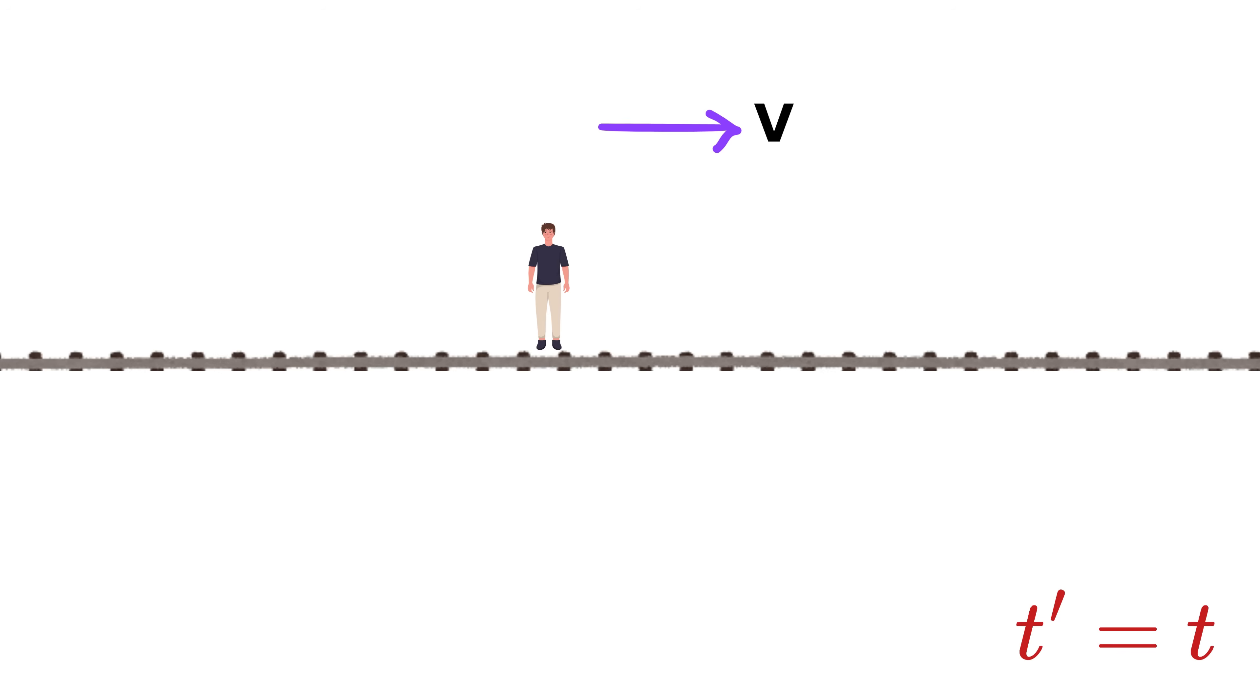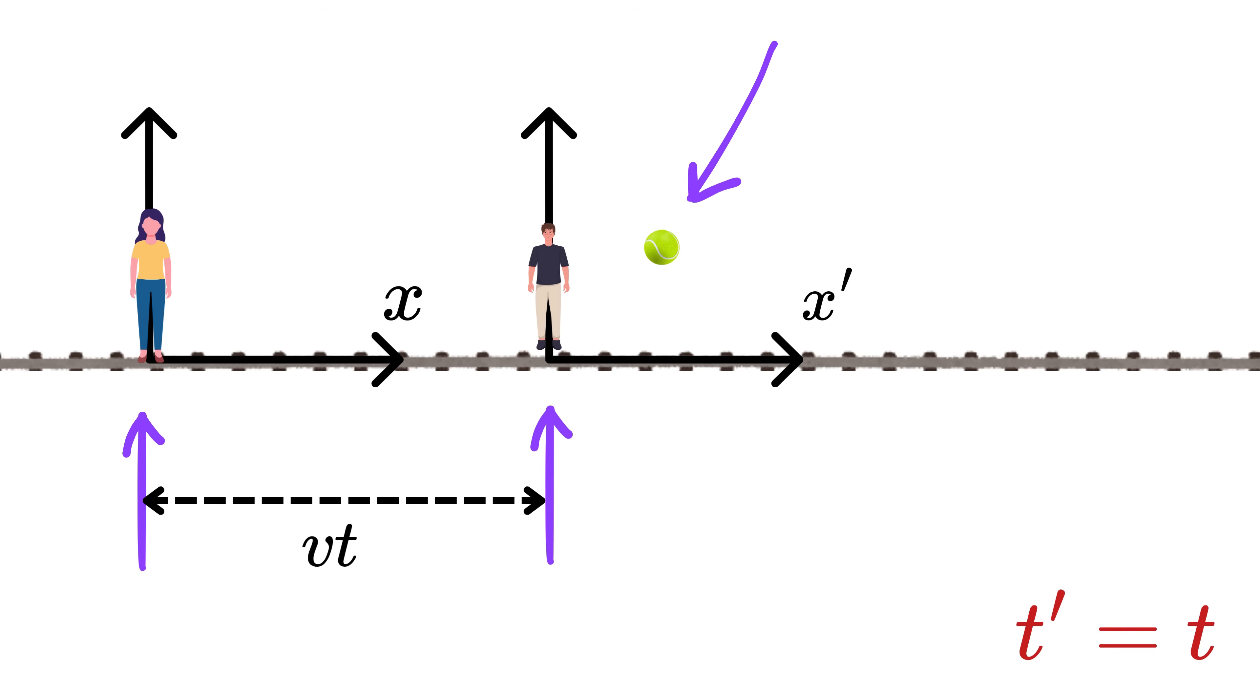But the position is a little different since Bob is moving forward with speed v. So after time t, the origin of the coordinate axis of Alice will be somewhere here, but the origin of the coordinate axis of Bob will be at a distance v times t from this point.